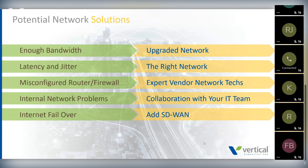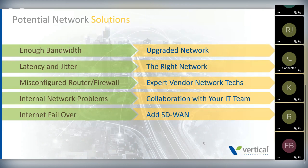If you don't have enough bandwidth, make sure you have a network assessment report showing why, and work with a vendor who can help you upgrade the network. Ideally, work with somebody who also sells you the network so they own both the cloud communication solution as well as the network it travels over — one person to call when you have problems. For latency and jitter, the right vendor will help you with that. They'll have expert network techs to help with router and firewall issues. There's also a great new technology called SD-WAN — software defined wide area network — which can give you a much more robust and survivable network at very low cost. We'll be spending more time on that topic in a future webinar.